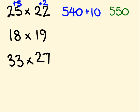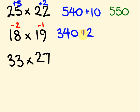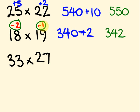For 18 times 19 using base 20: 18 is 2 below 20, 19 is 1 below. Cross addition: 18 take 1 is 17. Double it: 34, so 340. Now minus 1 times minus 2 is plus 2 — a minus times a minus gives a positive. So 340 plus 2 gives 342.